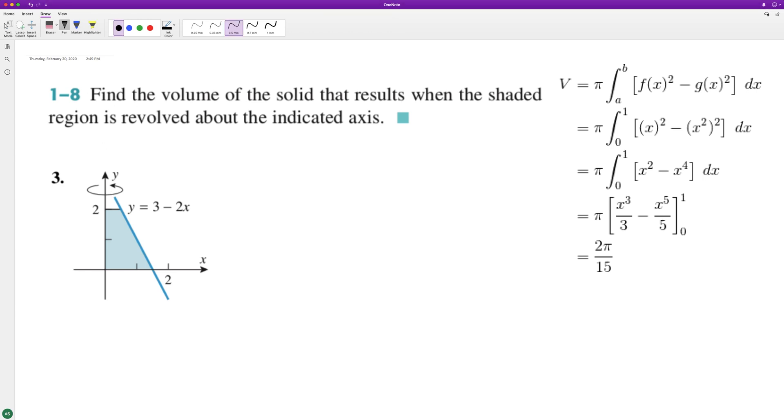Take this graph and rotate it around the y-axis. What we're going to do here is we actually need to solve this for x. So in this instance, we subtract 3 and divide it by negative 2.